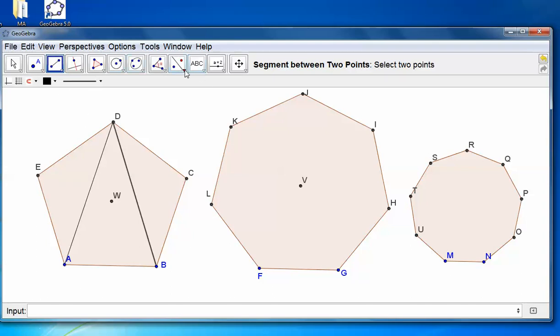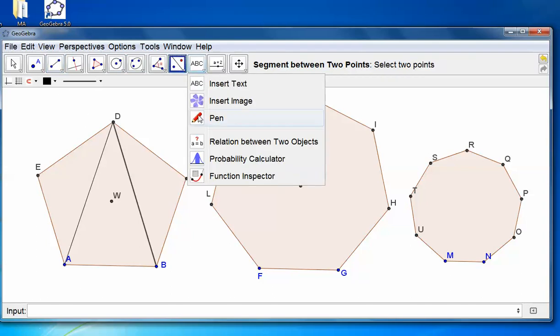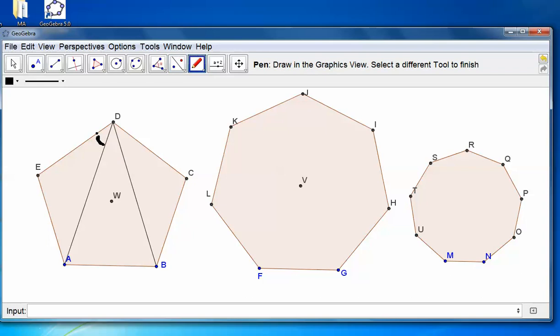So I could label these angles if I wanted to. That's the pen. There it is. I could label this angle here, and I'll call this X, which would mean this was also X as well.